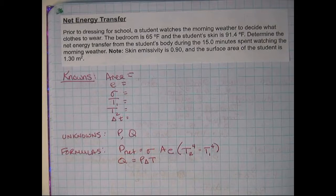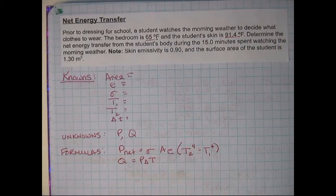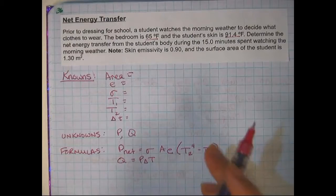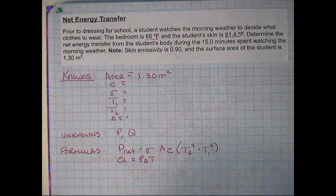So, it's saying that a student is going to watch the morning weather to decide what clothes to wear. And they're going to look at the temperature in the bedroom and the student's skin temperature. And we're going to determine how much energy they lose just by sitting in the cold room for 15 minutes. So, first we need the surface area. Well, they've calculated that they're estimating the surface area of a student is 1.3. Please don't ask how they found that. That's just an estimate.